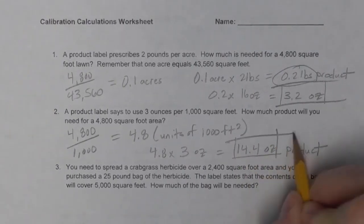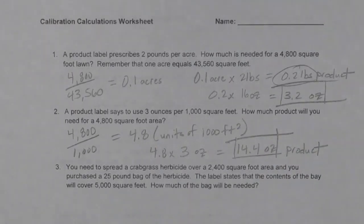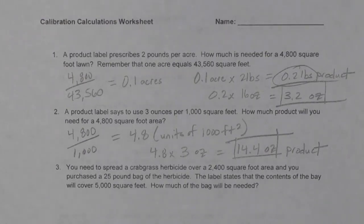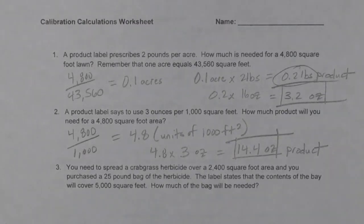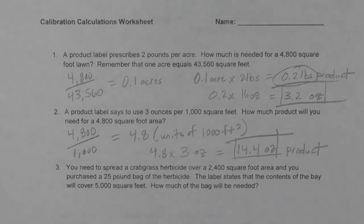Now you know how much it's going to cost you. Once you know the cost of the product and how much you're going to use, you can figure out your total product cost per yard, per year, per the entire company — and see how much total pesticide and fertilizer you'll use for the year. Take advantage of discounts from green industry suppliers by pre-ordering upfront.